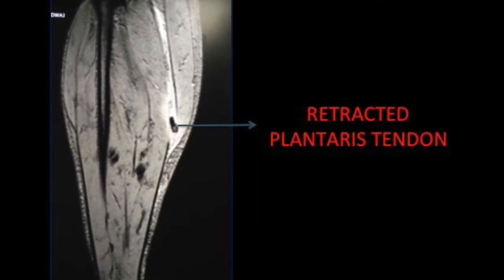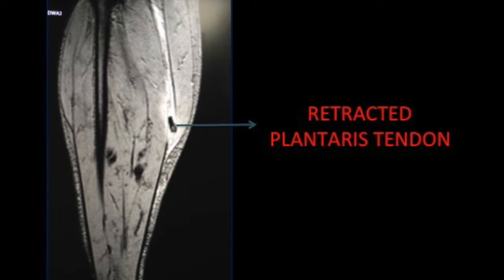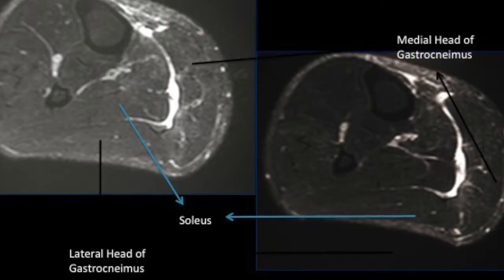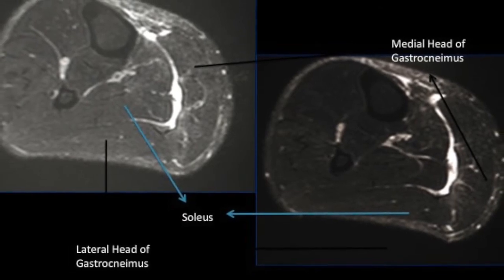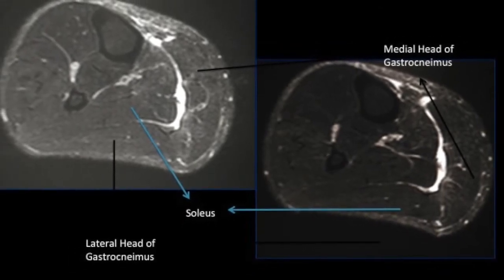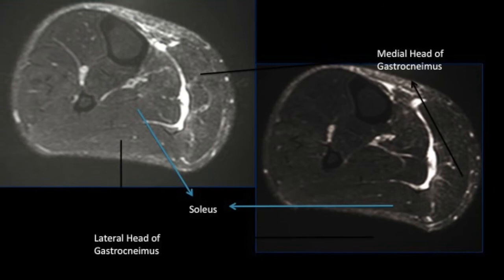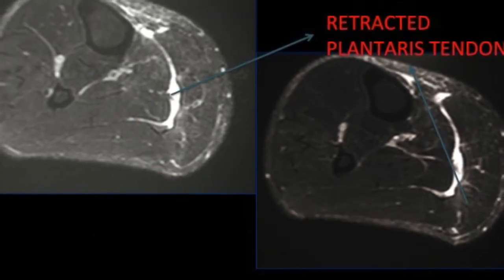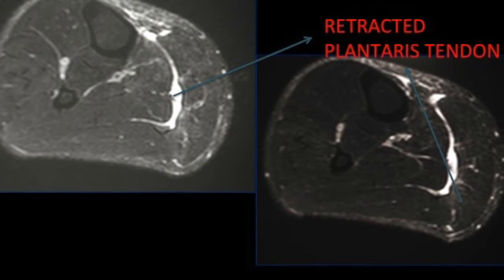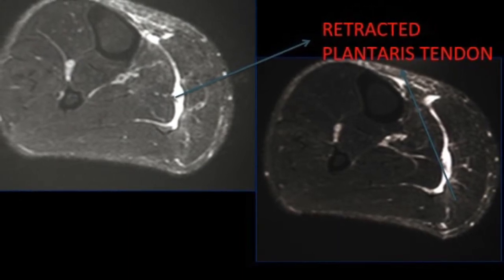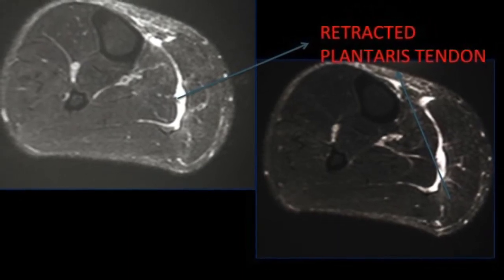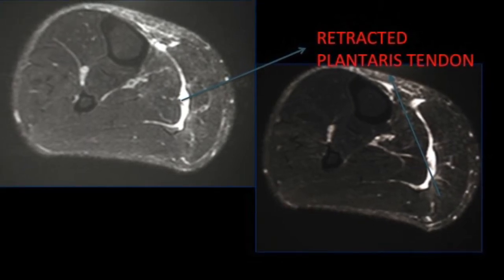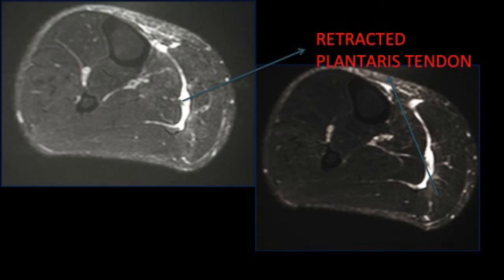Here are some examples in the labeled diagrams. The medial head of gastrocnemius is shown, along with the retracted plantarus tendon and the chink of fluid, all nicely seen. The retracted plantarus tendon is again demonstrated. There are also axial views showing the fluid in its typical location between the gastrocnemius and the soleus, with the retracted plantarus again visible.